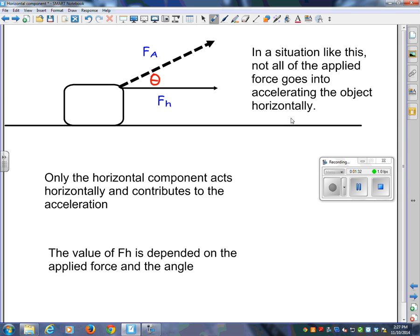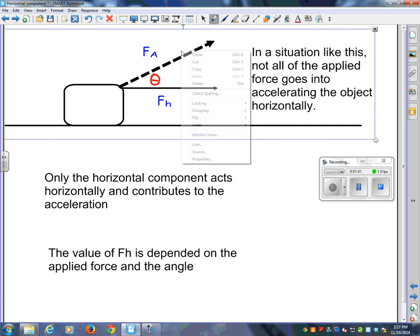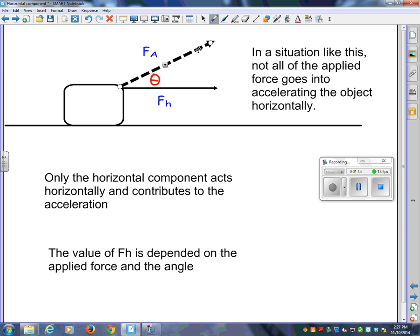If I decrease that angle, if I make it flatter, the force will be more horizontal. And will more of it go into pulling it sideways? Yeah. And if I do the opposite, if I take this force right here and crank it up like that, then hardly anything goes horizontal. This F-H is referred to as the horizontal component. Only the horizontal component acts horizontally and contributes to the acceleration.